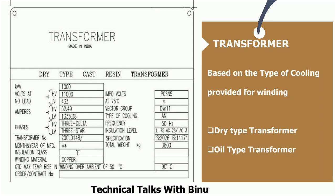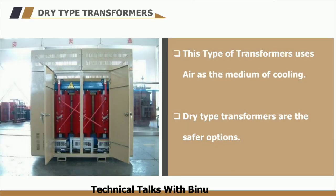This is the enlarged view of the nameplate and there you can see it is written as dry-type transformer. Now let's see in detail what is a dry-type transformer and what are the different classifications of transformers. Transformers are basically classified into two based on the medium of cooling used for the windings. These cooling mediums protect the transformer from getting heated up and prevent potential hazards. Based on this cooling method, transformers are classified into two: oil type transformers and dry-type transformers. In dry-type transformers, air is used as a medium of cooling. These are the safer option and we will be seeing them in most public places like a company or a building.